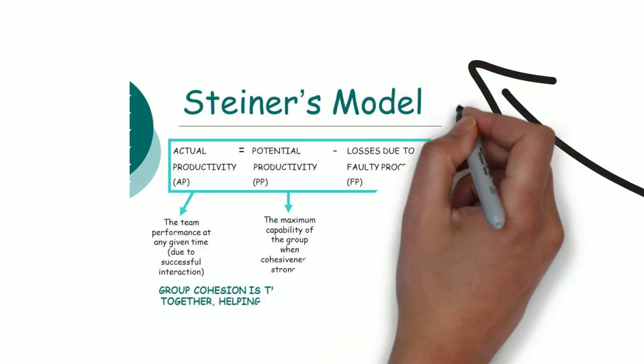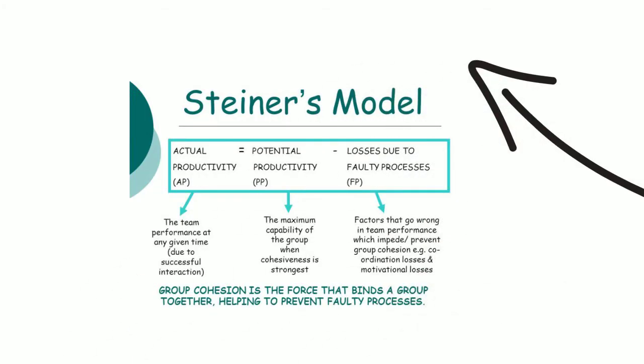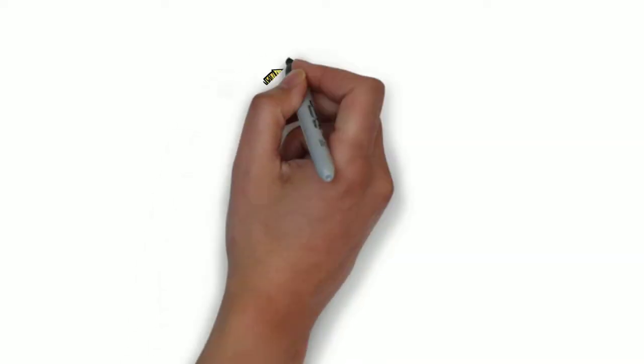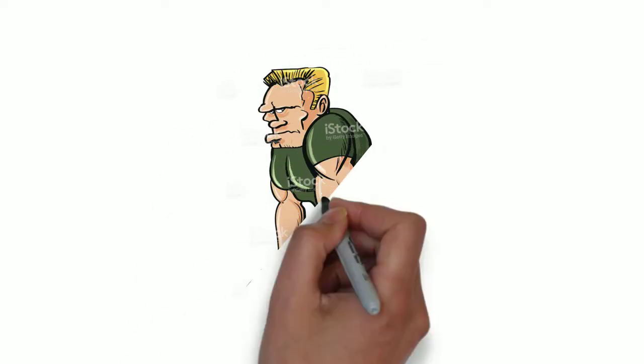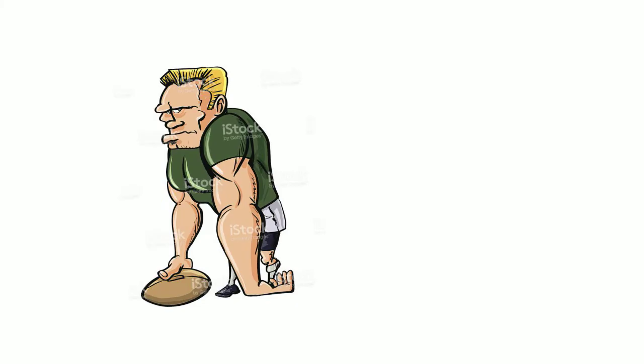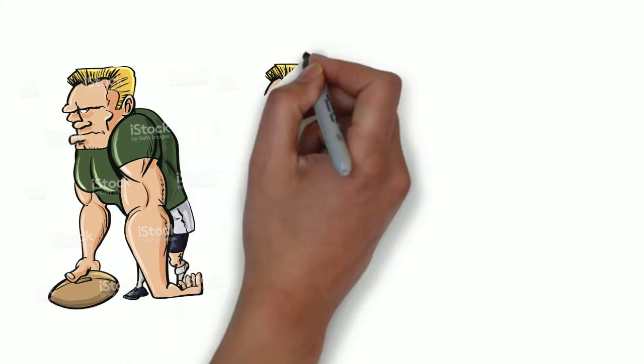Steiner made a model suggesting that group cohesion is the force that holds a group together. Within it, you have the actual productivity and the potential productivity, but some of that is lost through faulty processes. We're now going to look at those faulty processes — in other words, what makes a group not as effective as it should be.